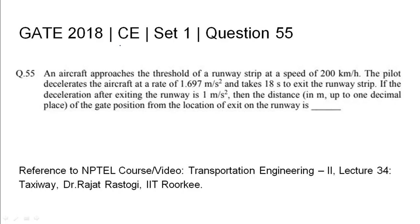GATE 2018 Civil Engineering, Set 1, Question 55. An aircraft approaches the threshold of a runway strip at a speed of 200 kilometers per hour. The pilot decelerates the aircraft at a rate of 1.697 meters per second squared and takes 18 seconds to exit the runway strip.